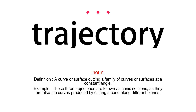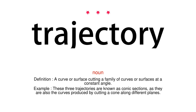Noun. Definition: A curve or surface cutting a family of curves or surfaces at a constant angle. Example: These three trajectories are known as conic sections, as they are also the curves produced by cutting a cone along different planes.